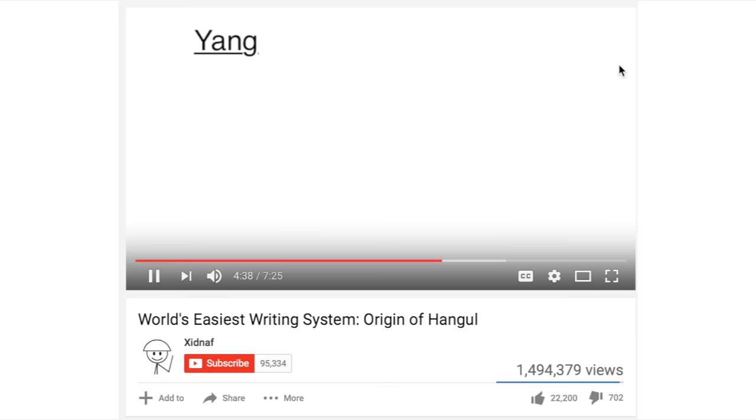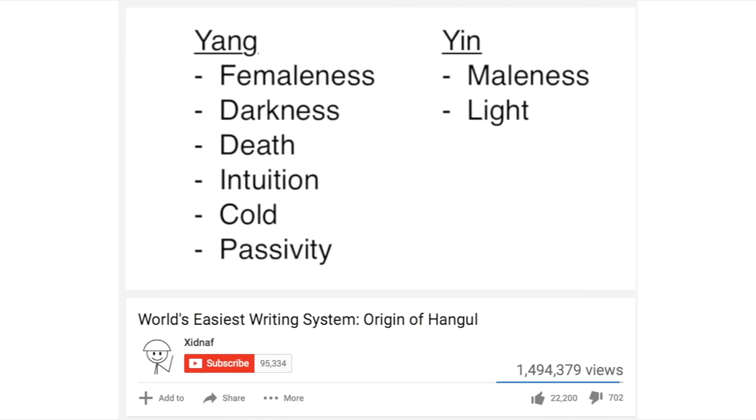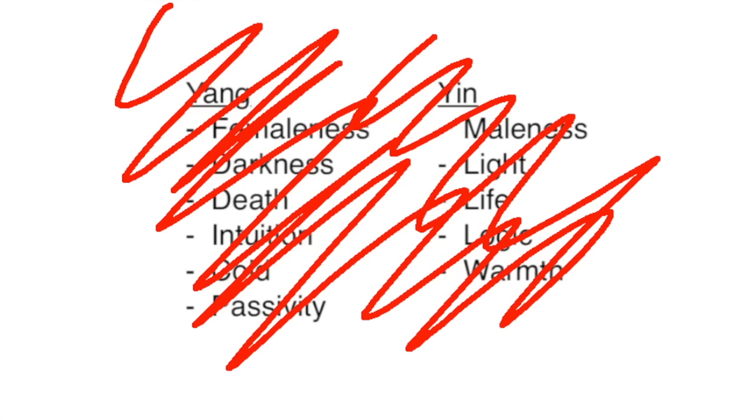Number 7. Yang is associated with females, darkness, death, intuition, cold, and passivity, while Yin is associated with maleness, light, life, logic, warmth, and activity. Nope, nope, nope, nope. Reverse all of that.